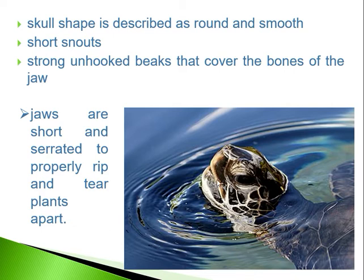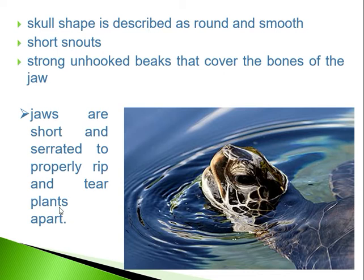The unhooked beak covers the bones of the jaw. Another peculiarity is that the jaws of this turtle are short and serrated — they have saw-like edges. This is because they feed on sea grasses and need to rip plants apart. Such serrated or saw-like jaws help in tearing the plants apart. So the head region has a round and smooth skull, short unhooked beak, and serrated jaws.